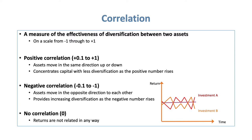Negative correlation runs from minus 0.1 to minus 1. This means if one asset goes up, the other goes down, or vice versa. The degree to which they move in opposite directions is determined by the number — the greater the negative number, the more these assets vary in their up and down returns. No correlation is essentially zero, where you cannot find any link between the two returns. We'll expand on this over the next couple of slides.